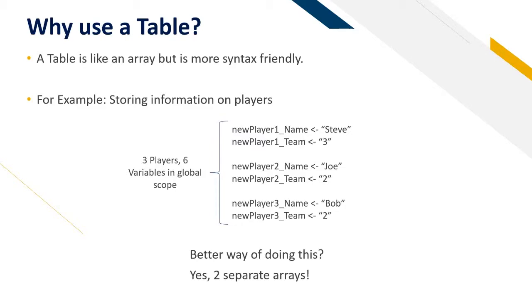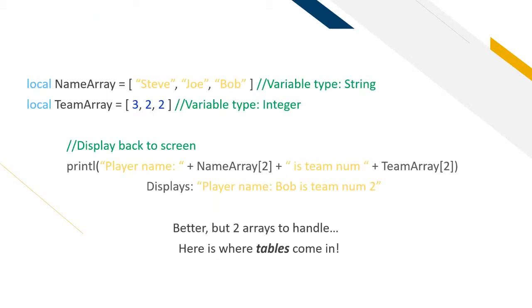Of course. Let's use two separate arrays. Now we have an array of strings and an array of integers. That means we have two variables to care about compared to six. But we can do far better, and this is where tables come in.